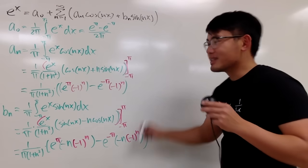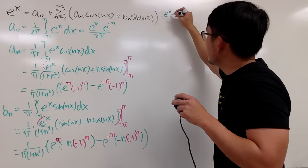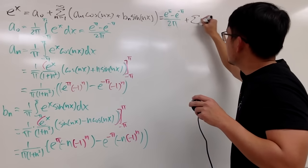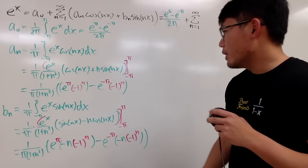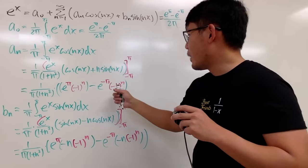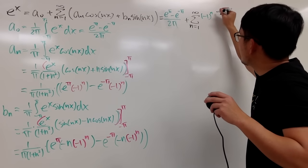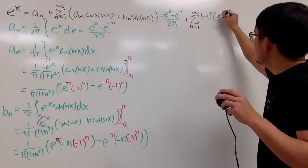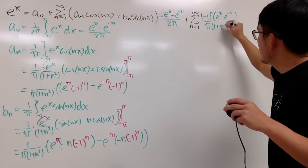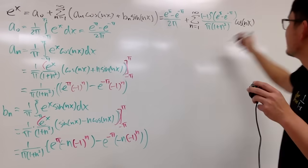Now let's assemble everything into the Fourier series formula. a₀ is (e^π − e^(−π)) / 2π. Then we add the sum as n goes from 1 to infinity. For the aₙ·cos(nx) term, factoring out (−1)^n, we get (−1)^n · (e^π − e^(−π)) / [π(1 + n²)] · cos(nx).